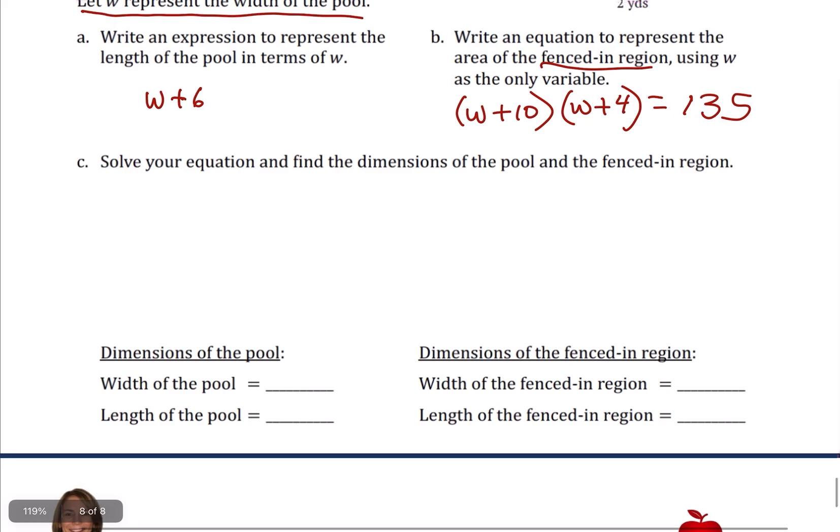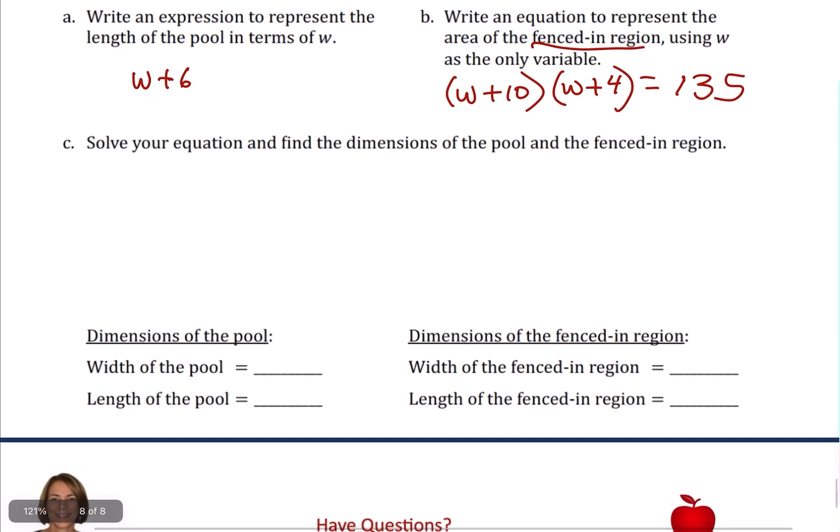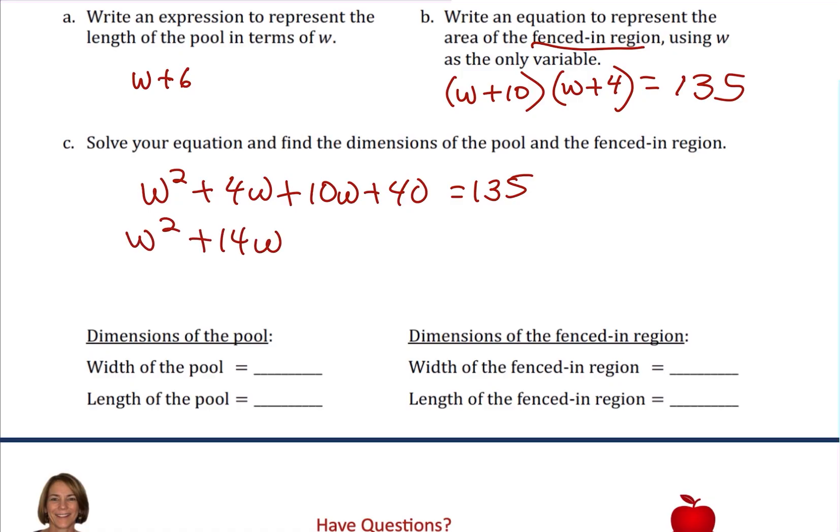Let's go to part C. So now we have to solve that equation to find the dimensions of the pool. I'm going to multiply with double distribution the W plus 10 times the W plus four. So we have W squared plus 4W plus 10W plus 40 equals 135, and we're going to simplify this quadratic equation to W squared plus 14W minus 95, and that's now equal to zero.